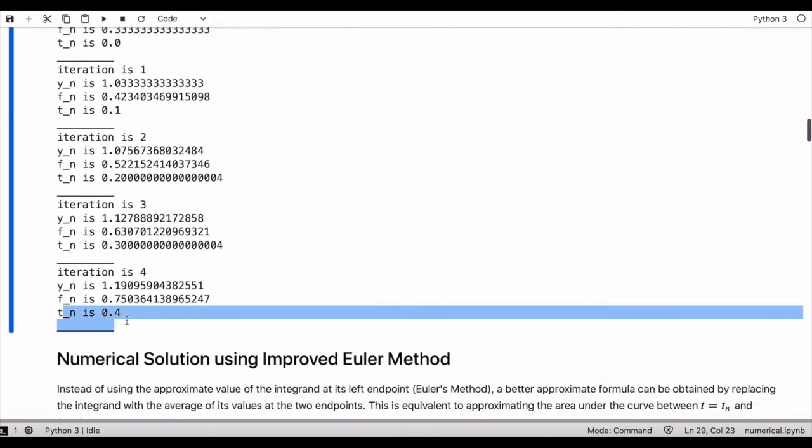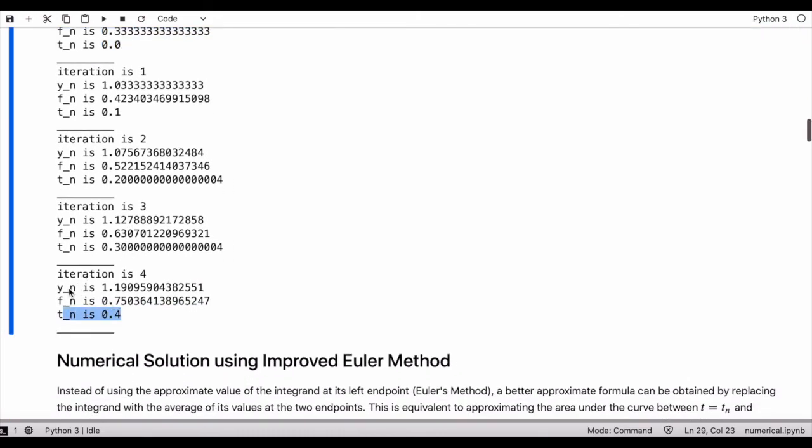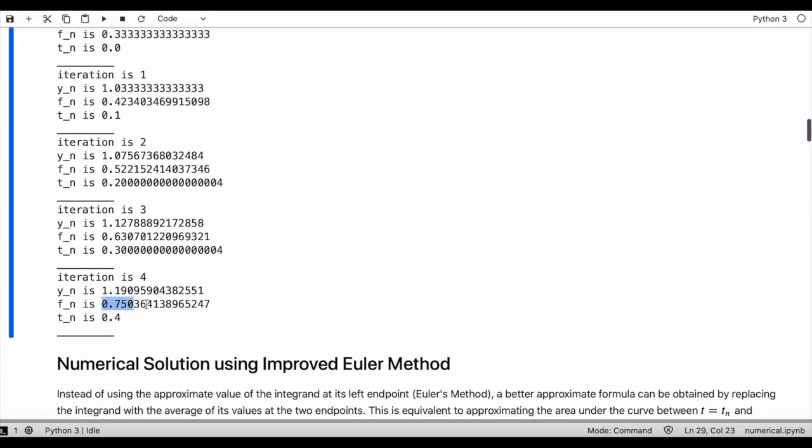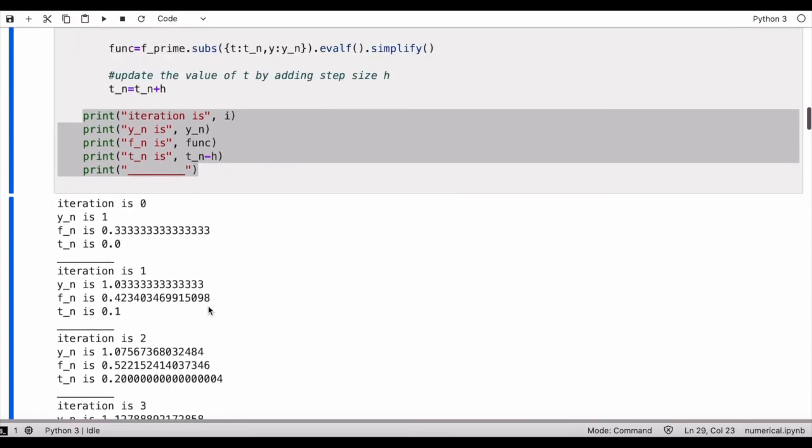Then it goes all the way up to t_n equals 0.4 and we get the value of the solution to be 1.19 at this given point and the slope to be this.